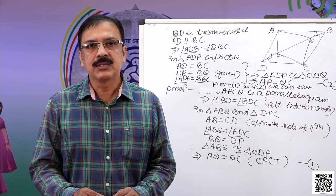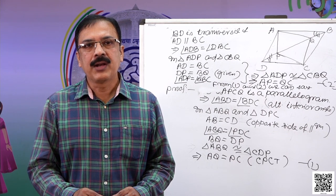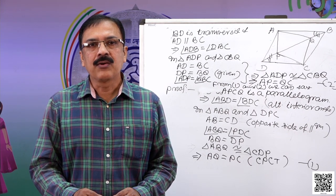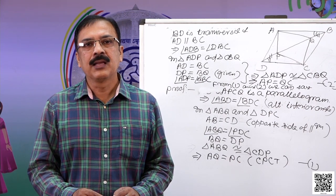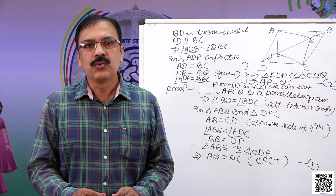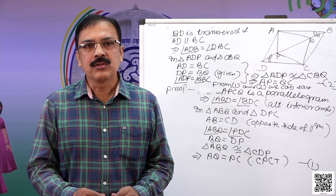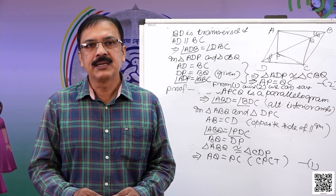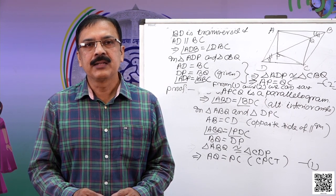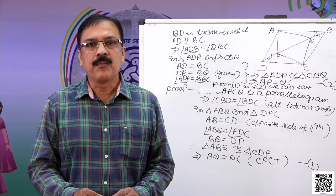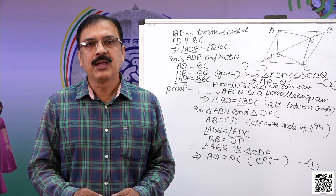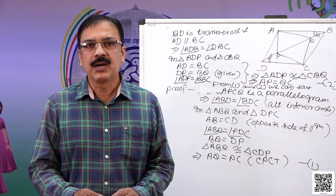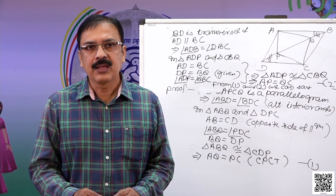Dear students, today we discussed about the diagonal property — that a diagonal divides the parallelogram into two congruent triangles — and also the opposite sides property, that the opposite sides of a parallelogram are equal. Thank you.